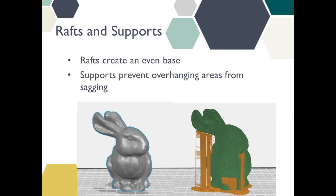Everything printed here at the library will be printed with supports and rafts. Rafts are a flat surface that act as a base for your object and help your object adhere properly to the build plate so that everything prints evenly. Supports are exactly what they sound like — they support any overhanging parts of your object. If we look at this rabbit here, the image on the left is what was actually submitted, but it comes off of the printer looking more like the image on the right. The green parts are what you actually want, while the orange parts are the raft and supports, which you will remove once your project has finished printing.